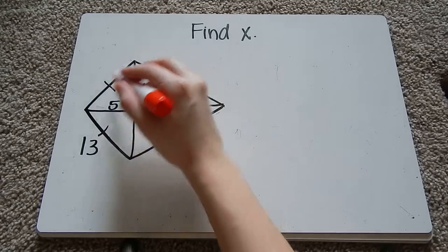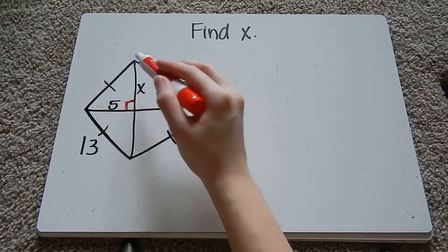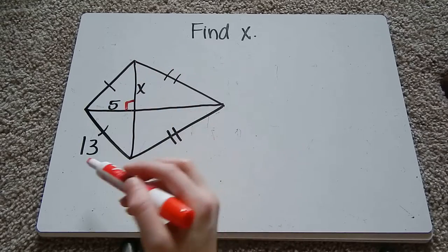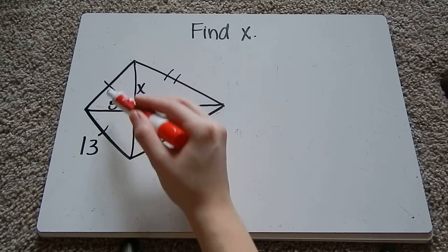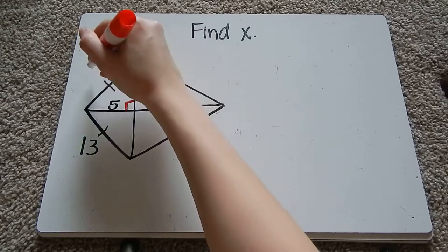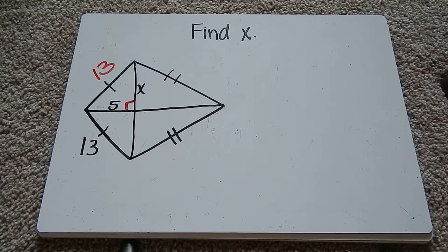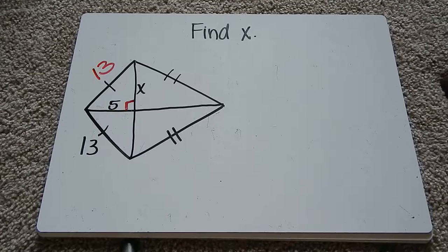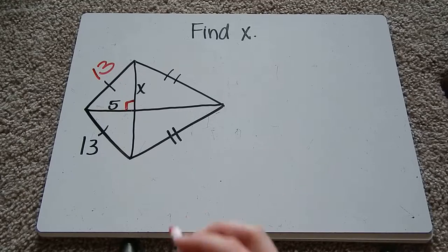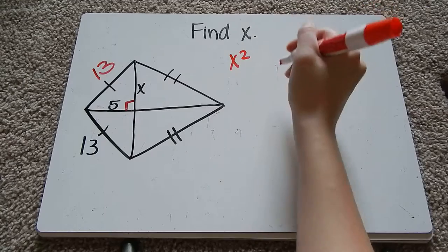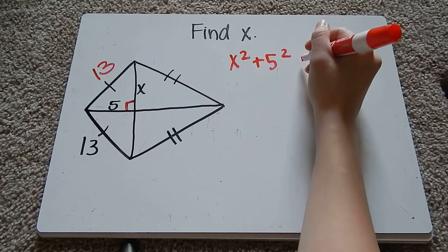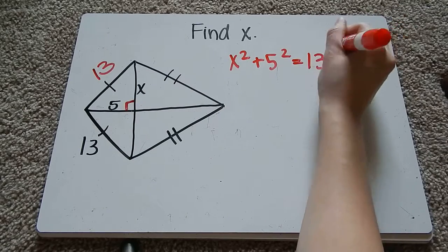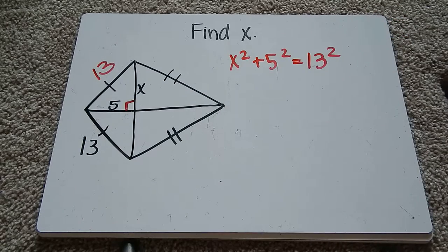So for this triangle I can't use Pythagorean theorem yet because I don't know this side here the hypotenuse. I do know this side here and I also know with kites these are congruent sides so this will actually be 13 as well. So now we can figure out x by using the Pythagorean theorem. So that's going to be a squared which I'm going to call x plus b squared which I'm going to call the 5 here equals c squared the hypotenuse.